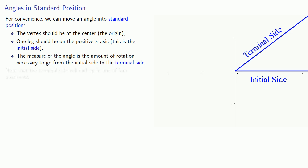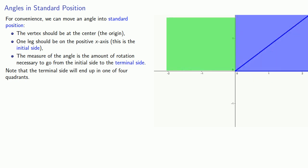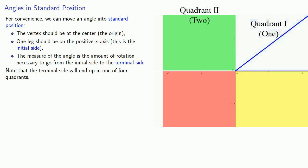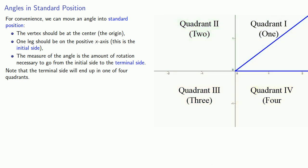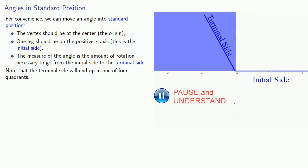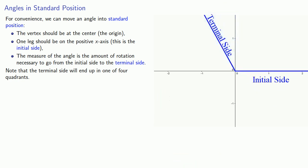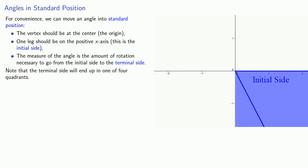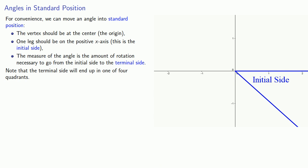We rotate the angle until one leg is on the positive x-axis. The measure of the angle is the amount of rotation necessary to go from the initial side to the other side of the angle, which we call the terminal side. The terminal side will end up in one of four quadrants — the four regions bounded by the x and y axes. We number these counterclockwise: quadrant one, two, three, and four. An obtuse angle will end up in quadrant two. If we keep rotating, we could have the terminal side in quadrant three or quadrant four.